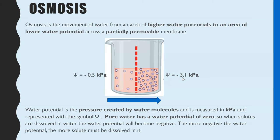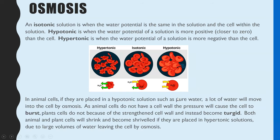Following on from that are three key terms: isotonic, hypotonic, and hypertonic. Isotonic is when the water potential on both sides of the membrane are the same. Hypotonic is when the water potential of a solution is more positive compared to the cell — and when we say more positive, it doesn't mean a positive value, just a negative value closer to zero. Hypertonic is when the water potential of a solution is more negative compared to the cell, meaning it's a more concentrated solution than the cell.